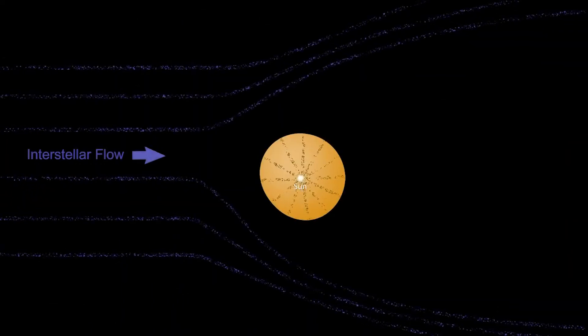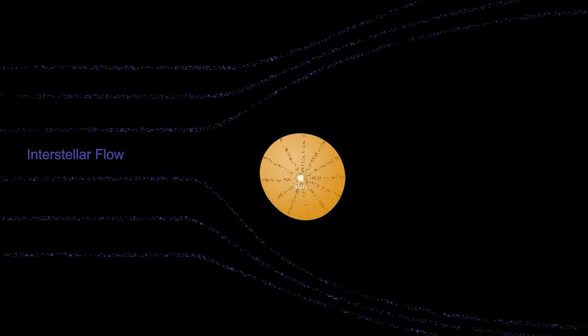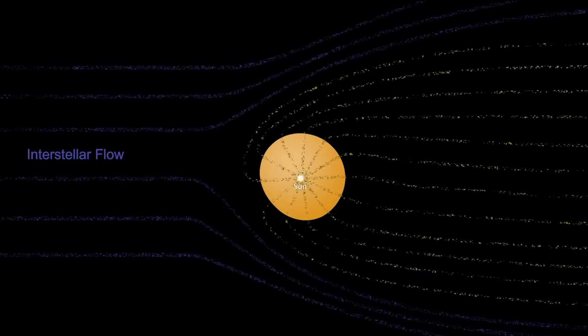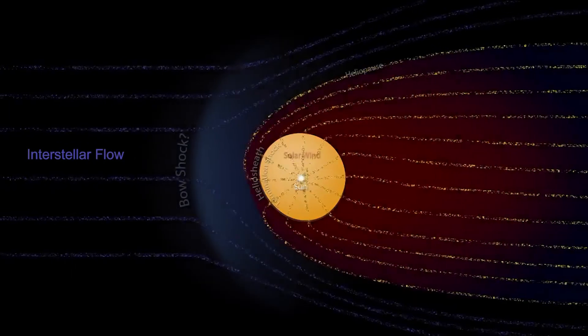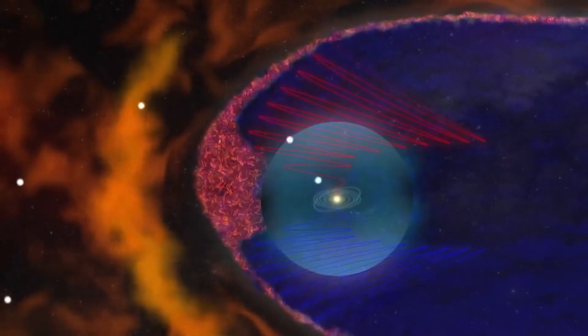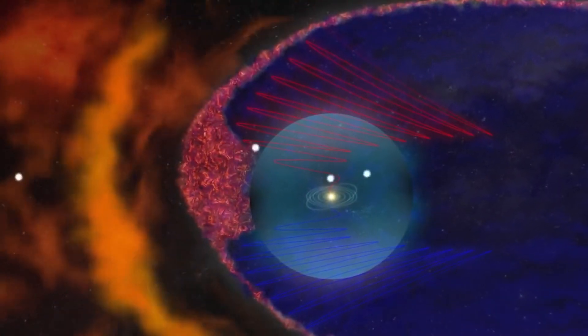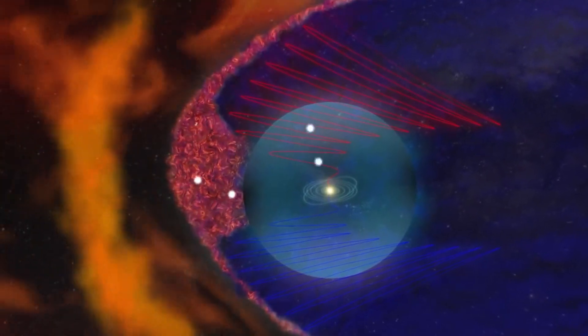However, the transition to interstellar space, where the solar wind gives way, marks a more accessible frontier. It is in this uncharted territory that the heliopause, the boundary between our solar system and interstellar space, resides.